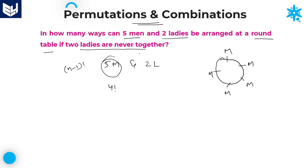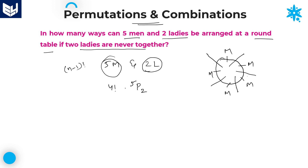Now, since the 2 ladies are never together, we need to place the 2 ladies between the men only. Between the men, we have a total of 5 positions. These are the 5 positions left over, and we need to arrange 2 ladies in these 5 positions. Arranging 2 members out of 5 places is 5P2 ways.